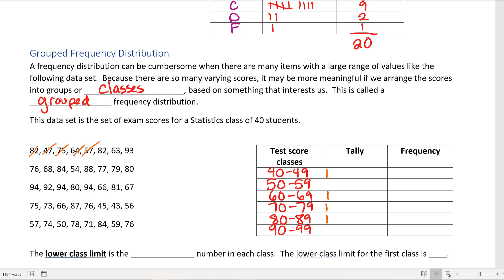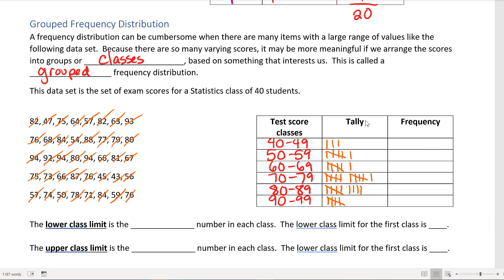We continue tallying the scores into their appropriate groups. Now I'd like you guys to pause the video so that you can try this on your own. Once you've got that done, notice we have a total of three tally marks between 40 and 49.